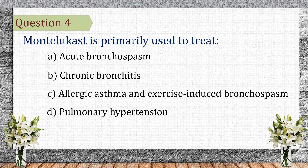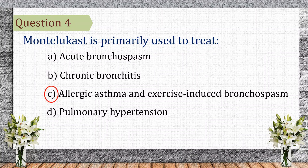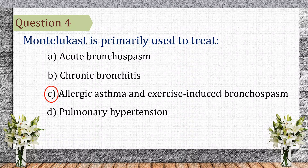Question 4. Montelukast is primarily used to treat what? The correct answer is C: allergic asthma and exercise-induced bronchospasm. Montelukast is a leukotriene receptor antagonist that reduces airway inflammation in allergic asthma and exercise-induced bronchospasm.